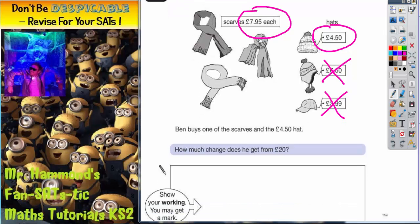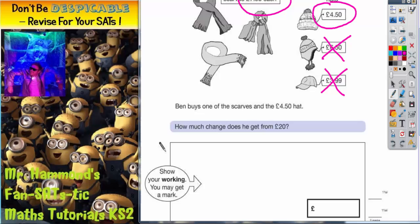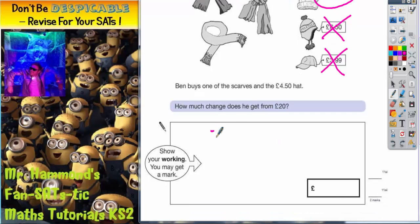The first thing we've got to do is figure out how much he's spending altogether. So he's spending £7.95 and £4.50. If we do a quick addition column method, 5 plus 0 is 5, 9 plus 5 is 14, put your 4 in, carry the 1. 7 plus 4 is 11, plus that one is 12. So altogether he's spending £12.45.